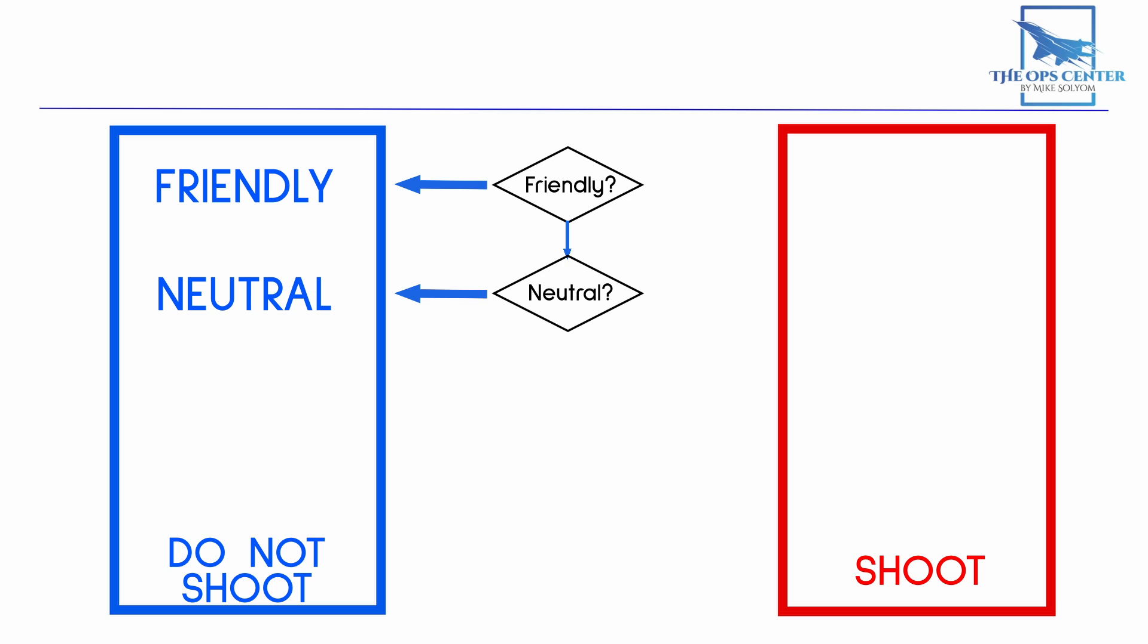Non-cooperative target recognition or a passive ID through a radar warning receiver could work in this case. But what happens when NCTR can't ID a target and it's not emitting signals?